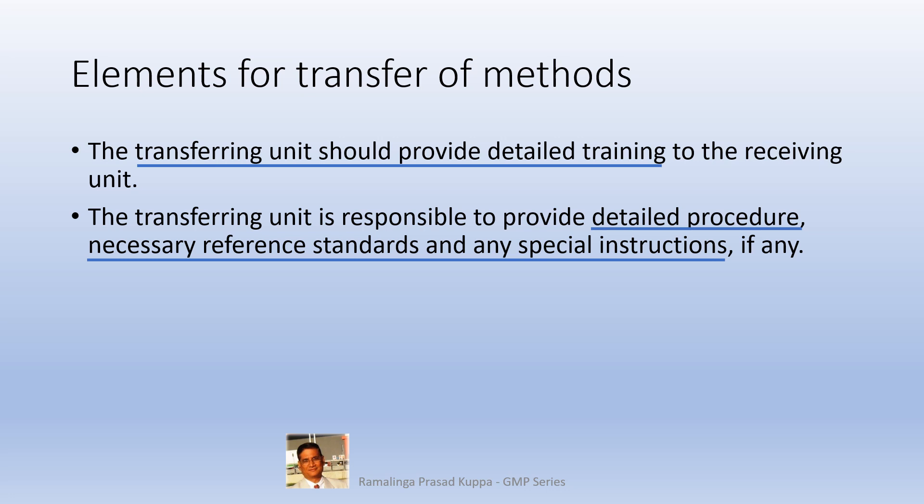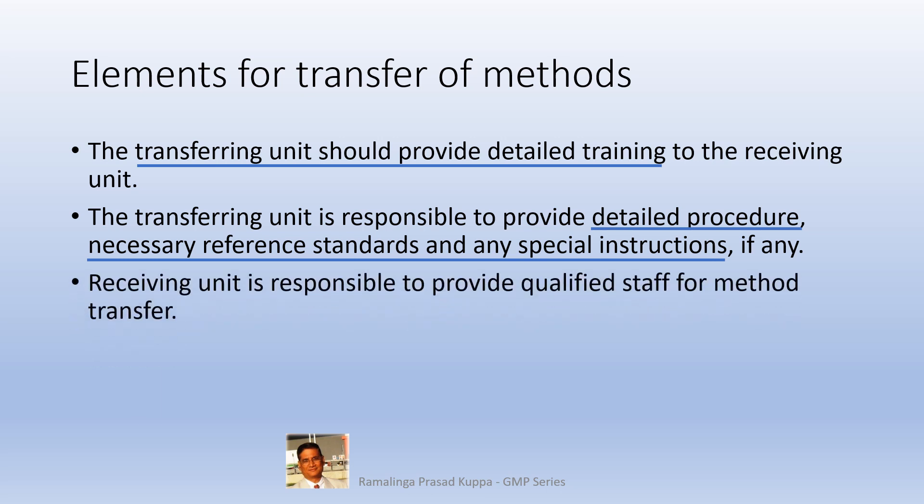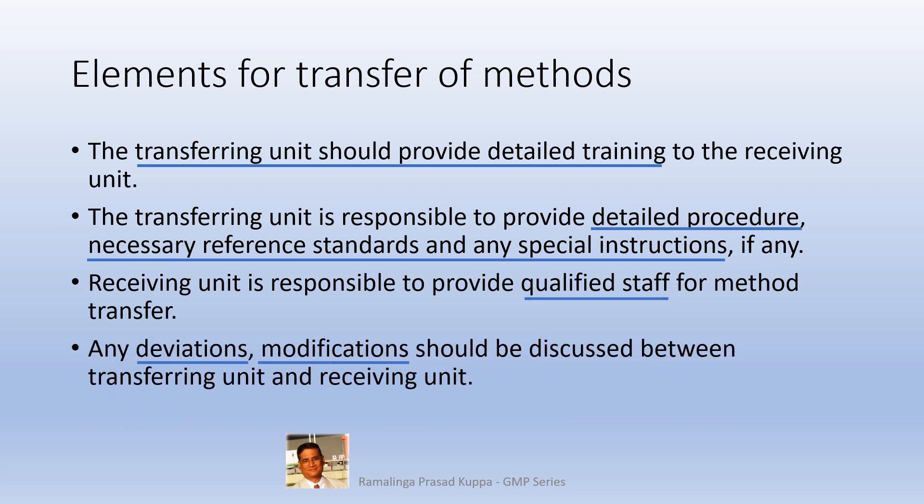The transferring unit should also provide reference standards, impurity standards, and any specific reagents required, along with valid certificates for the standards. The receiving unit is responsible for providing qualified staff for method transfer. Any deviations or modifications should be discussed between the transferring unit and the receiving unit — this is a GMP requirement. Any changes or modifications should be resolved mutually with scientific justification. Quality risk management per ICH Q9 will help to identify risks and provide tools to mitigate them.